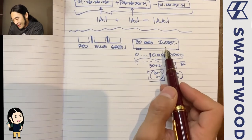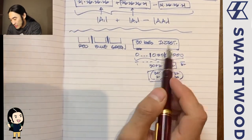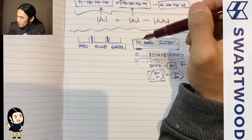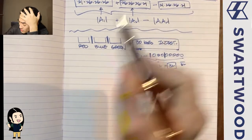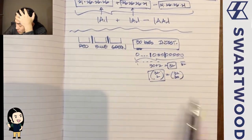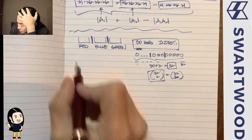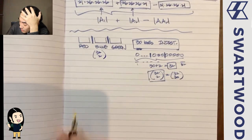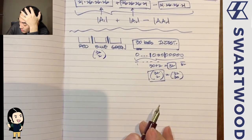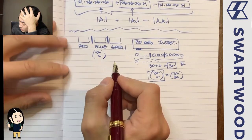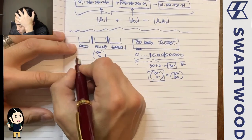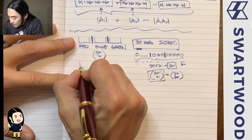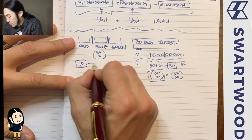So the number of ways to put 30 indistinguishable balls into three distinguishable urns is 32 choose 2. Now let's add a twist: the maximum number of balls in any given urn is 10.